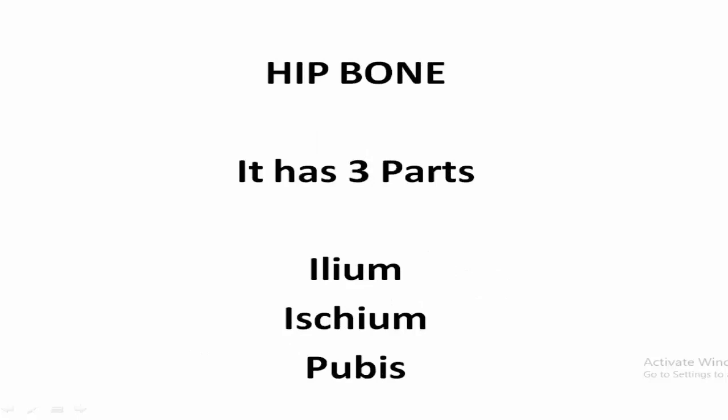But before we start, we must know how many parts the hip bone has. The hip bone has 3 parts: ilium, ischium, and pubis.